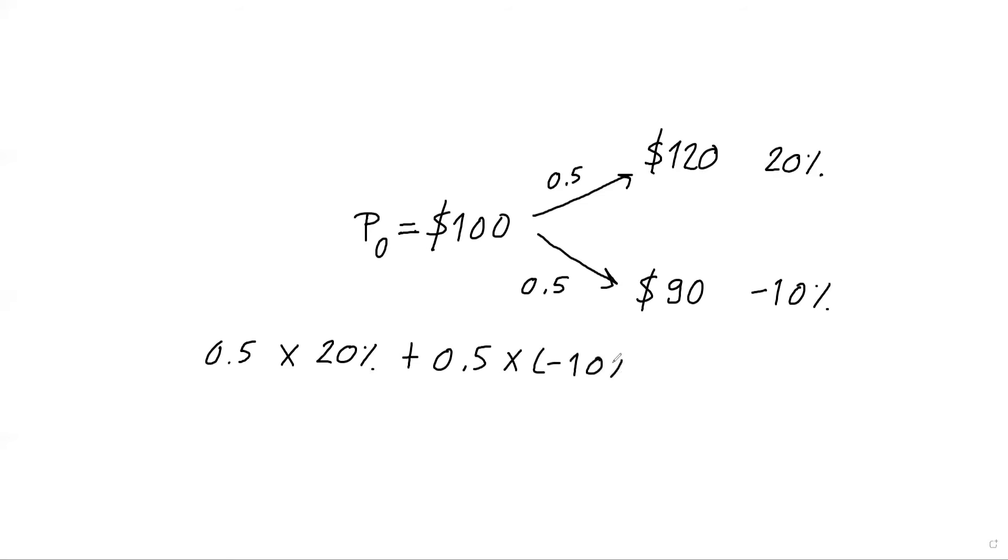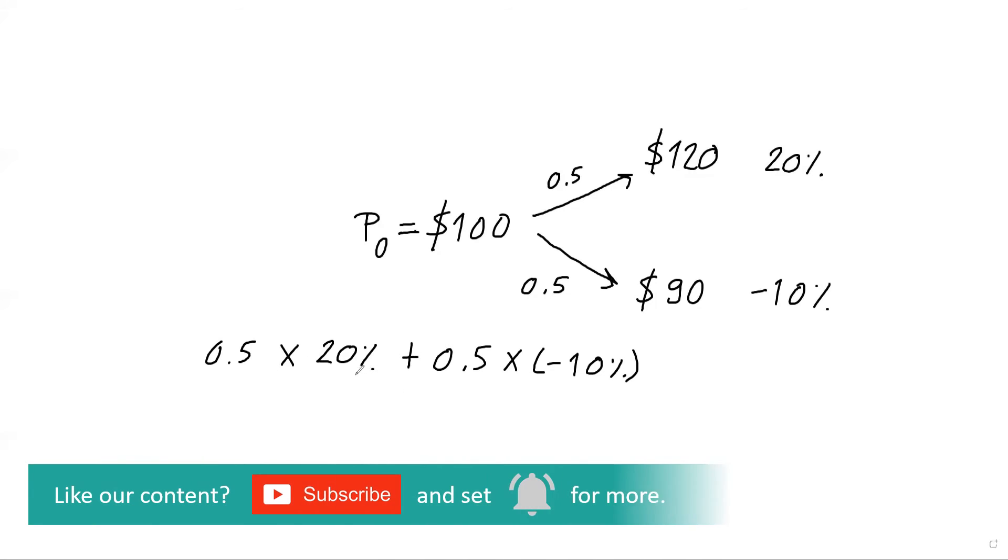And that will give me the expected return. Okay, here we are. So we've got 0.5 probability times 20% and 0.5 probability times minus 10%. And because the probabilities are 50% each, this will give me an expected return of 5%.